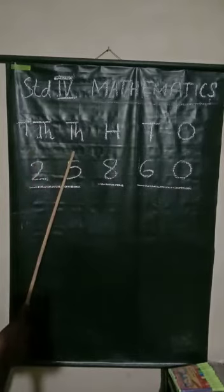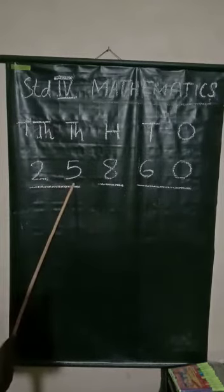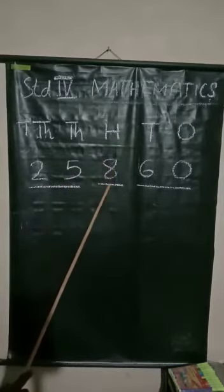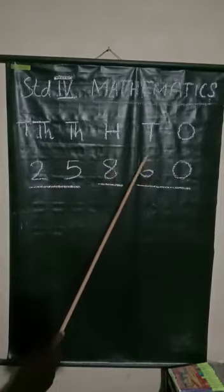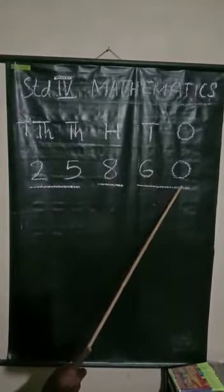Let us read from the first place onwards. Ten-thousands and thousands make the number twenty-five. How many thousands are there? Twenty-five thousands. How many hundreds are there? Eight hundreds. And tens place and ones place make the number sixty. We know that it is sixteen.